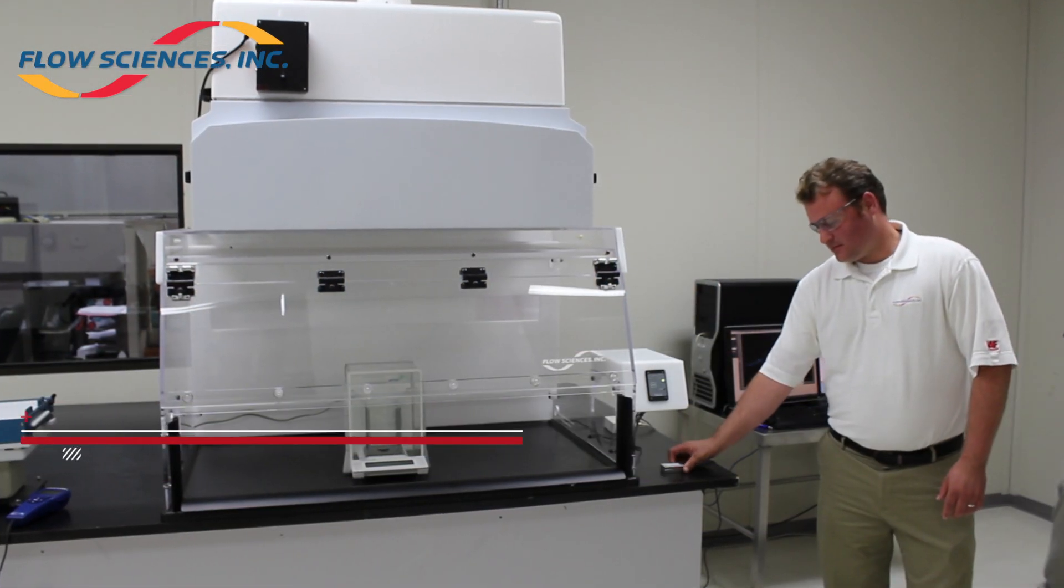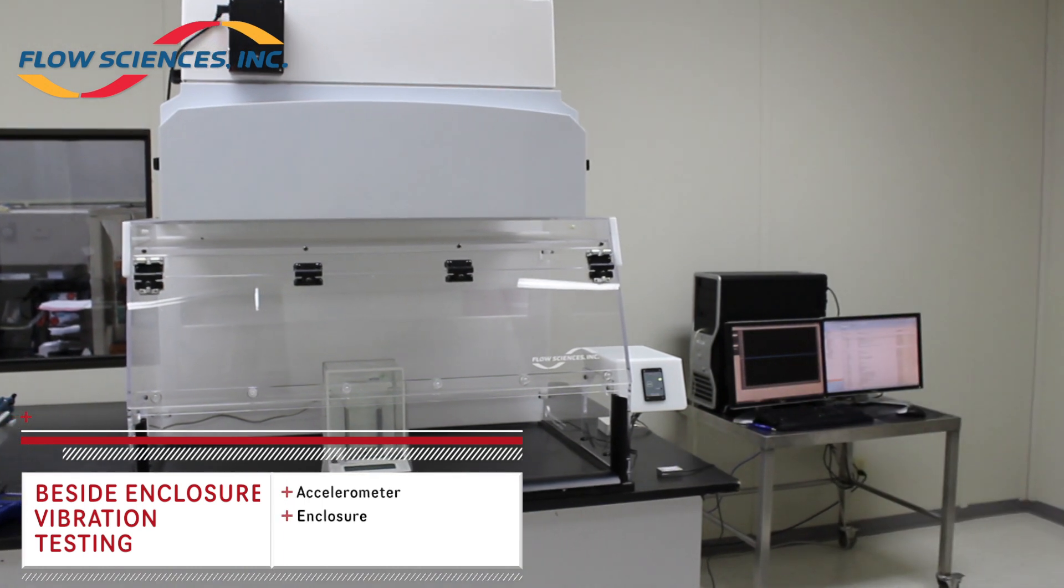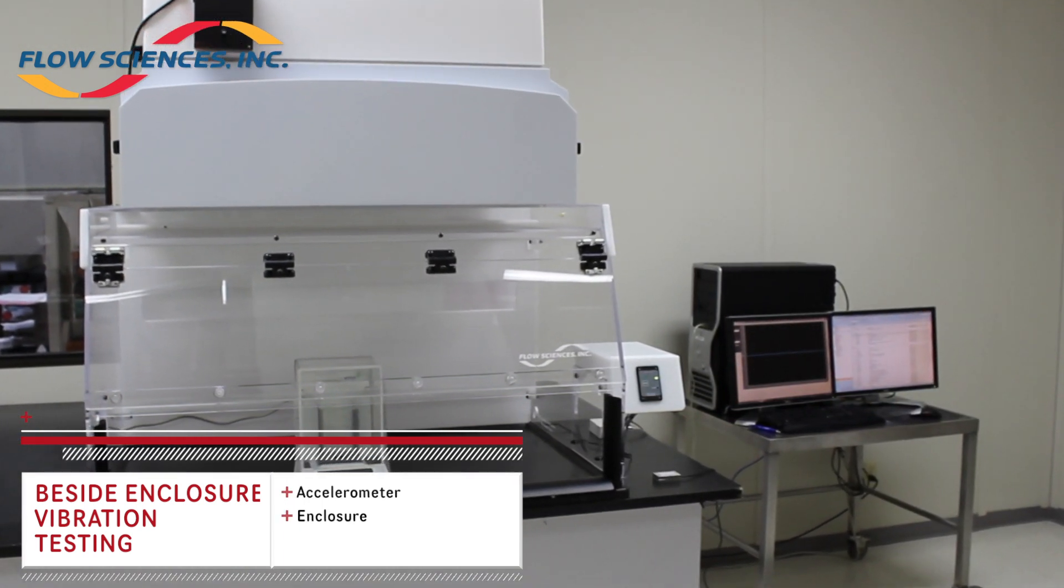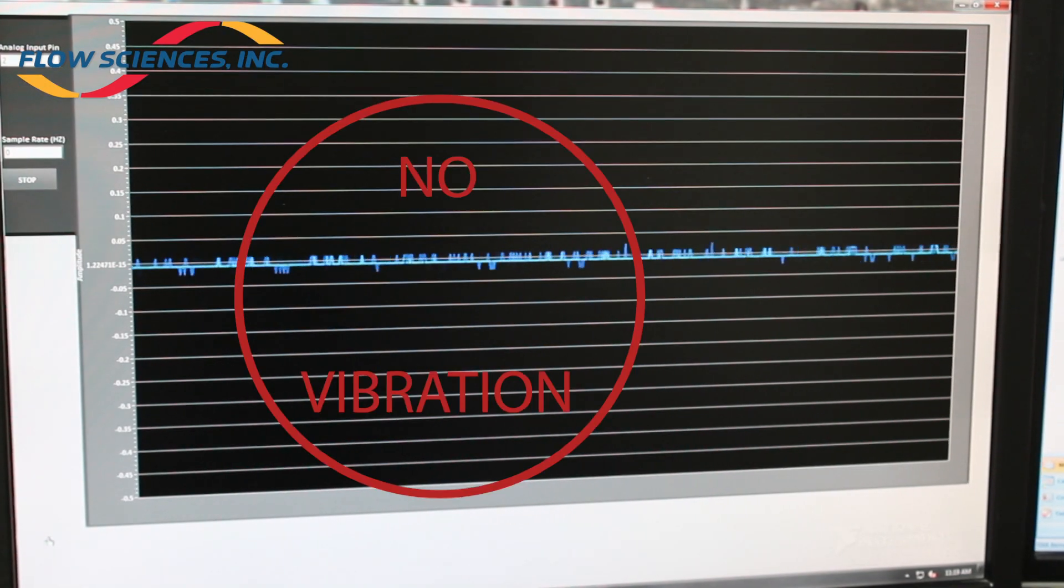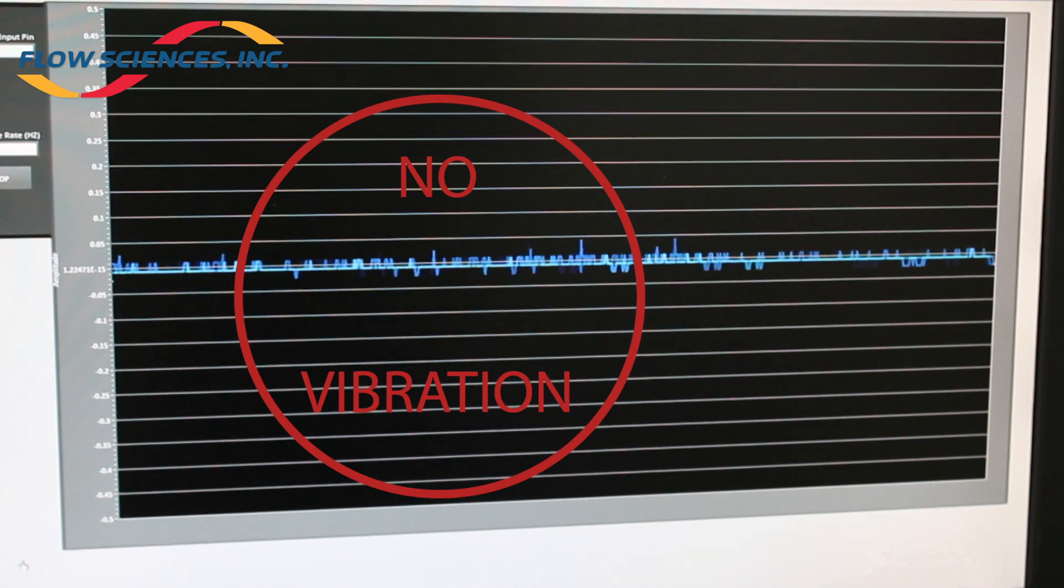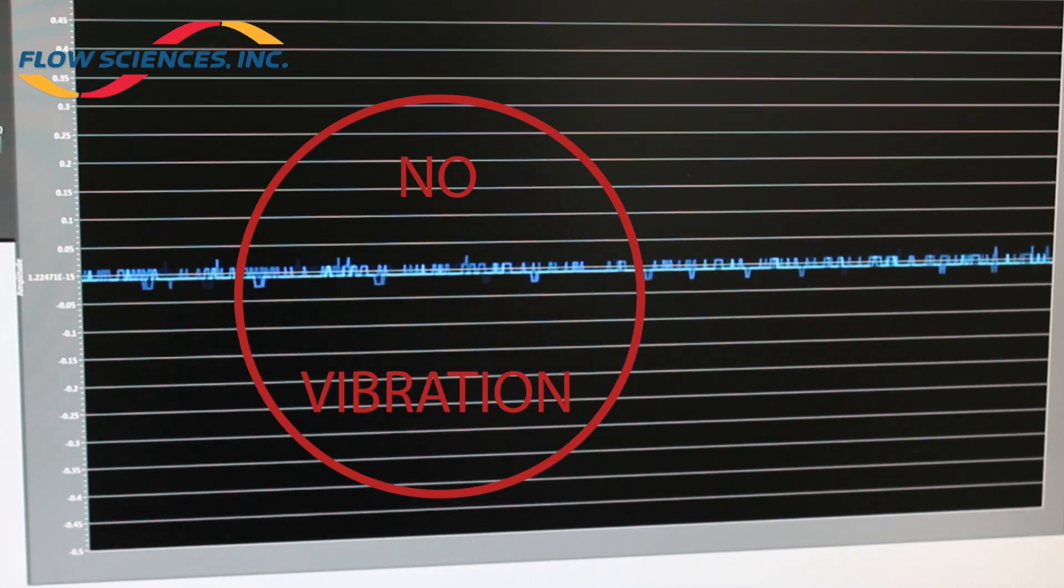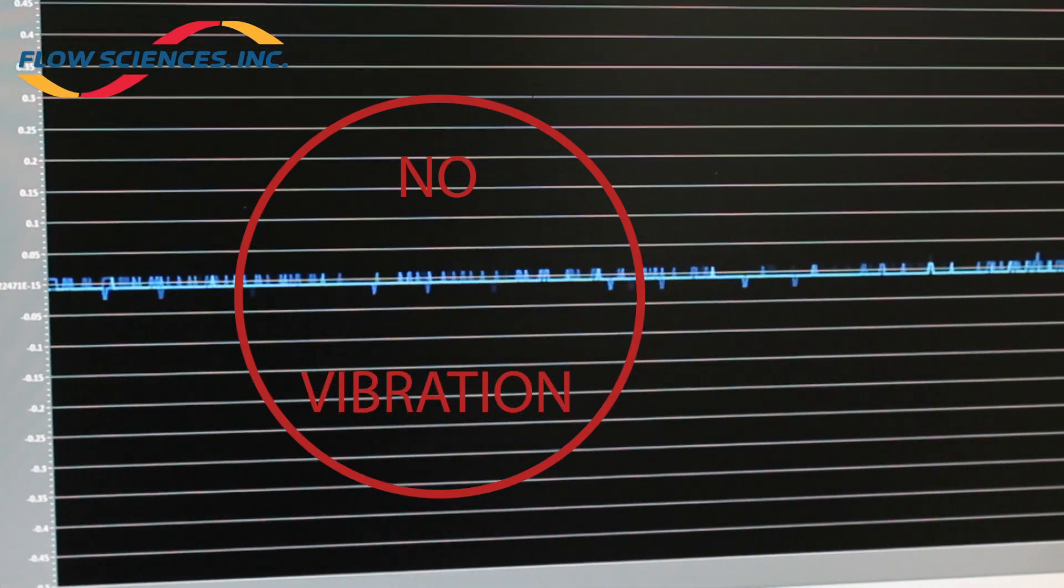Test 4: With the fan still set at a standard operating face velocity, the sensor was placed beside the enclosure centered on the benchtop work surface. This was to determine what vibrations travel through the enclosure from the fan unit onto the actual benchtop work surface.